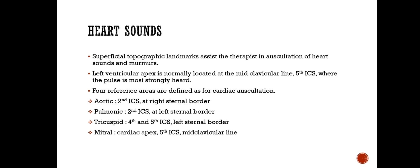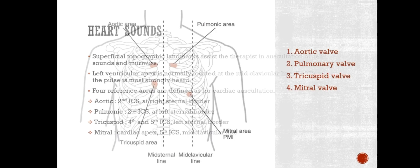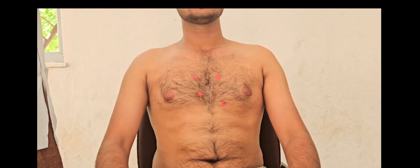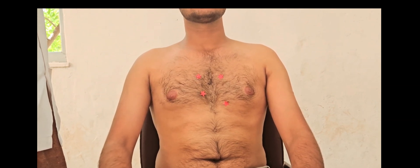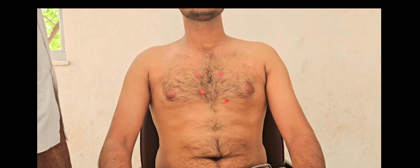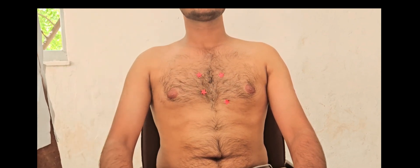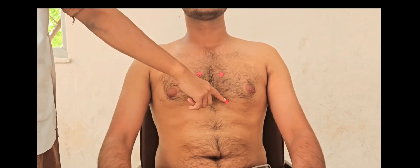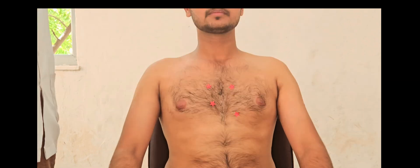Heart sounds. Superficial topographic landmarks assist the therapist in auscultation of heart sounds and murmurs. The left ventricular apex is normally located at the mid-clavicular line at the 5th intercostal space, where the pulse is most strongly heard. There are four areas: at the 2nd intercostal space right sternal border for aortic; 2nd intercostal space left sternal border for pulmonic; 4th–5th intercostal space left sternal border for tricuspid; and 5th intercostal space mid-clavicular line for mitral.